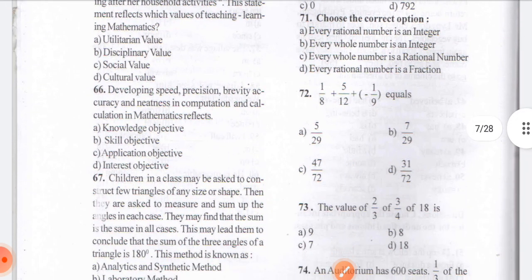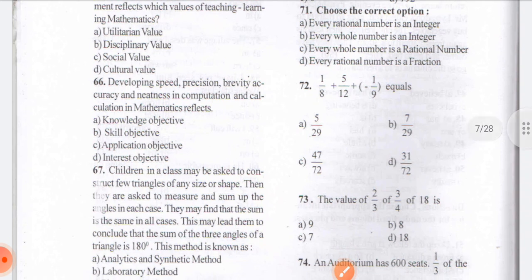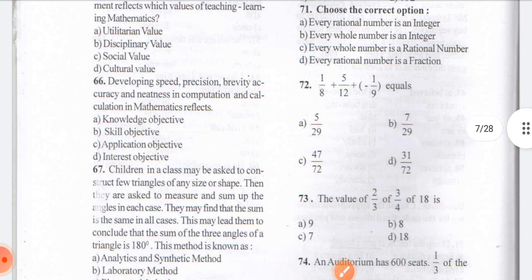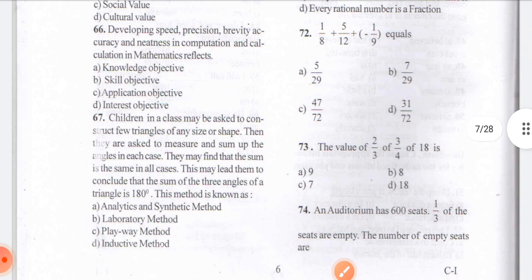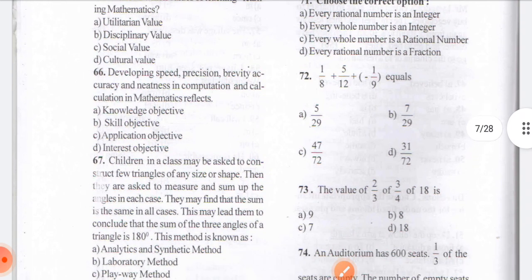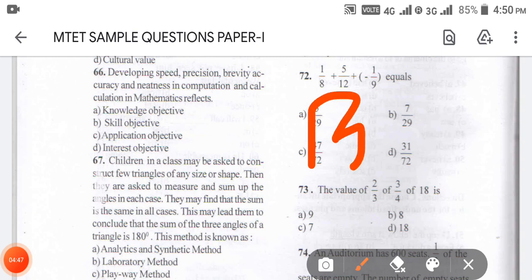Coming to question number 66: developing speed, precision, optimization, brevity, accuracy, and neatness in computation and calculation in mathematics reflects which objective? Options are A — knowledge objective, B — skill objective, C — application objective, and D — interest objective. The answer for 66 is B — skill objective.